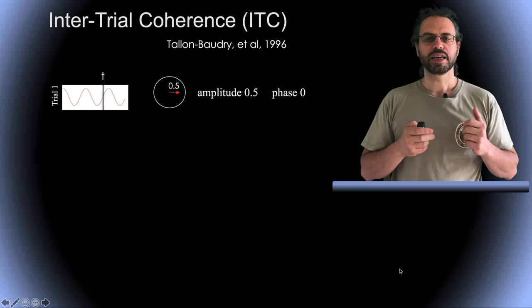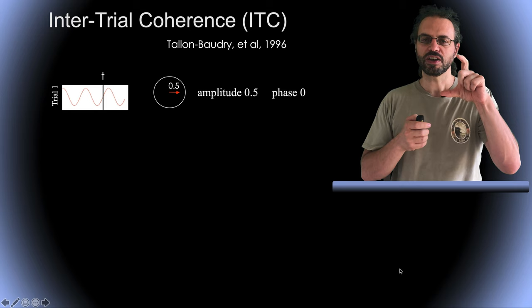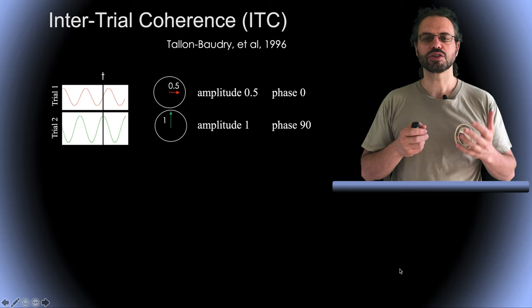This is a signal in red and the corresponding phasor at the dominant frequency of the signal. The orientation of the vector depends on the phase of the signal at time t and the length depends on the amplitude of the signal.